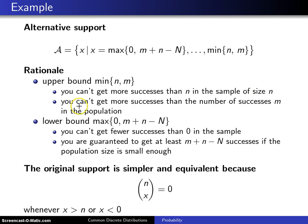Second of all, you can't get more successes than the number of successes m that are in the urn or in the population. So that's why you can write the upper end of the support this way rather than just using lowercase n on the previous slide.